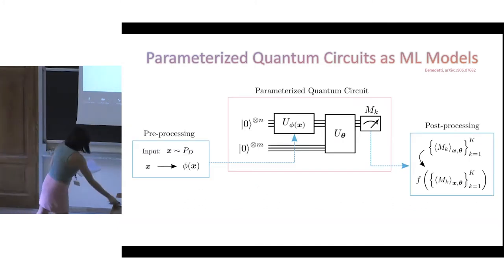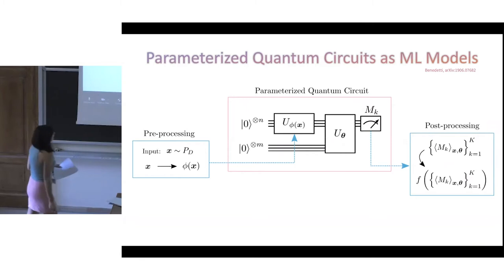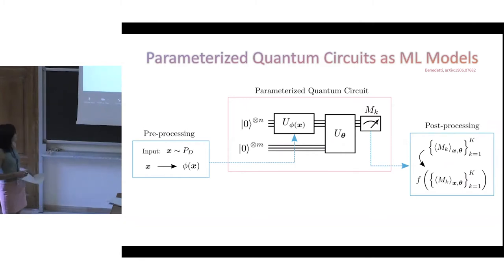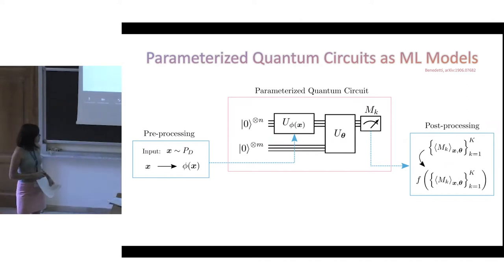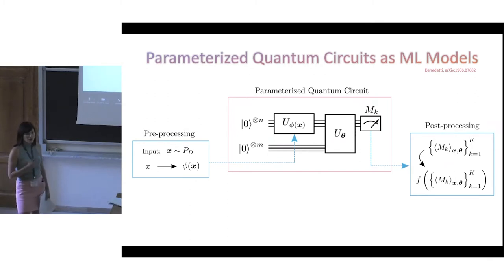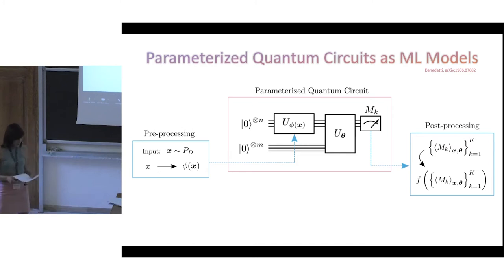The main components of a parameterized quantum circuit are the following. We'll go into the details of each ingredient in the next couple of slides. This is a very general scheme, so you will need to adapt it to your particular application.